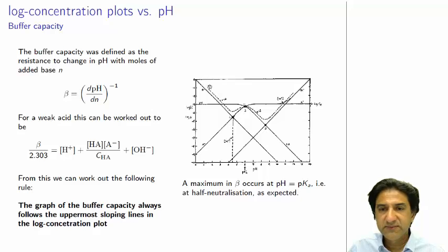...it follows the topmost sloping lines in the graph. So if we want to graph beta, a simple trick is to follow the H-plus line. It comes down, it goes up. It passes exactly through the same point as this intersection point.